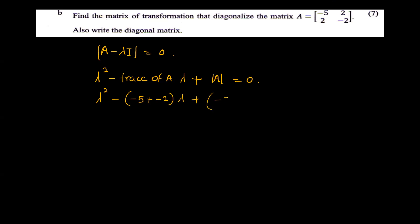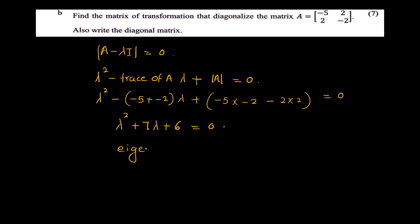The determinant of A is minus 5 into minus 2 minus 2 into 2, giving lambda squared plus 7 lambda plus 10 minus 4, that is plus 6 equal to 0. Solving this, the eigenvalues are lambda equal to minus 1 and minus 6.